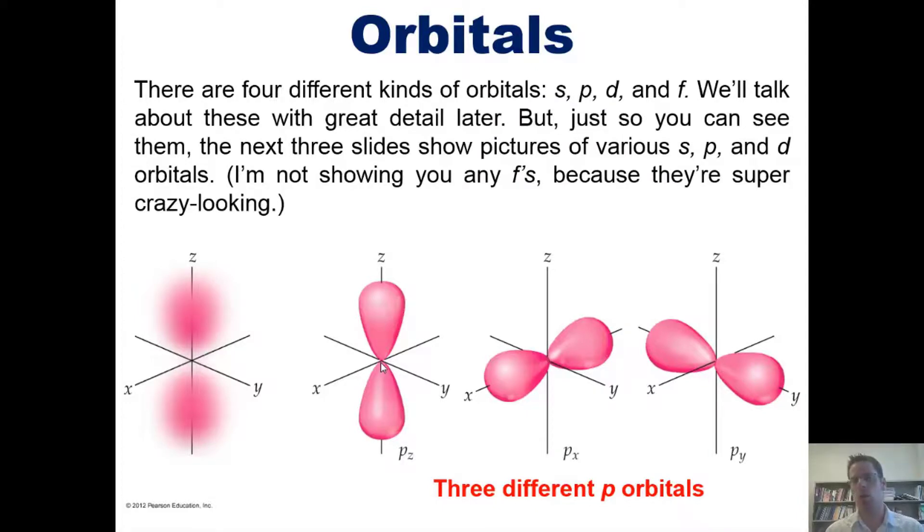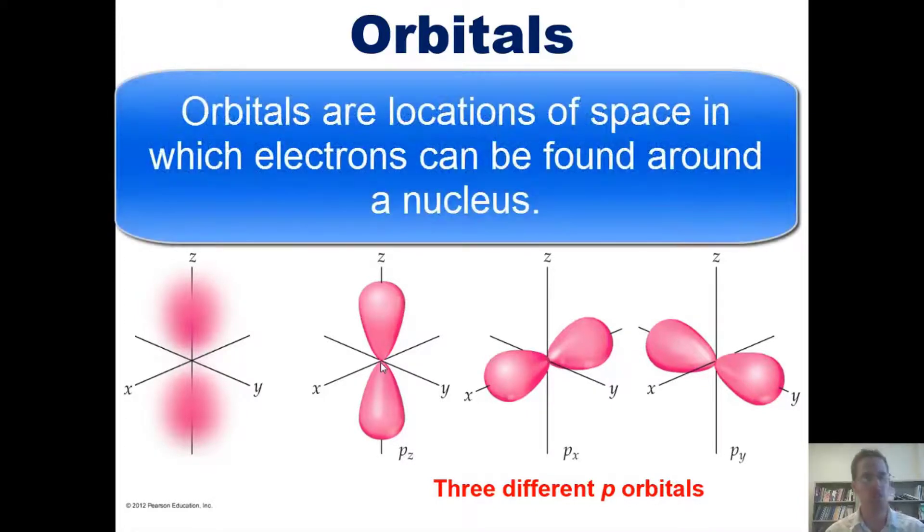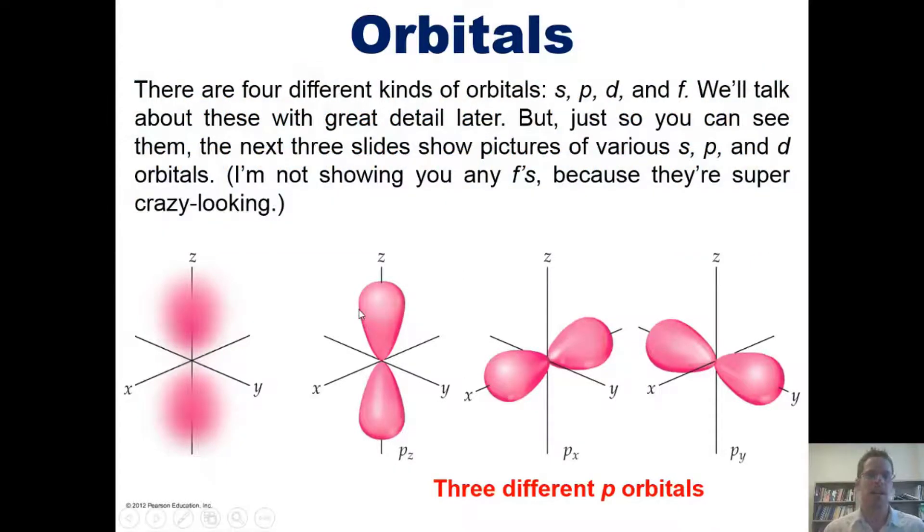Like all orbitals, the p orbitals are locations of space in which certain electrons can be found around the nucleus. The only difference between p orbitals at a 2 energy level or a 3 energy level or a 4 energy level or so forth and so on is their size—they just get larger and larger and larger.